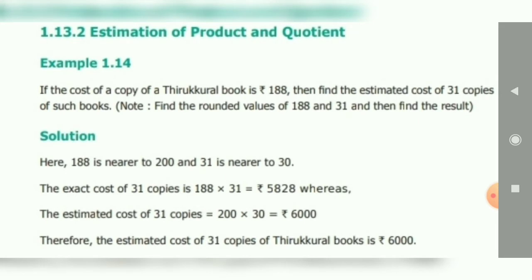Example: The cost of one copy of a Tirukural book is Rupees 188. Find the estimated cost of 31 copies. The cost of one book is Rupees 188; we have to calculate the cost of 31 copies, so 188 multiplied by 31. The actual answer is Rupees 5828. In estimation, 188 is nearest to 200.